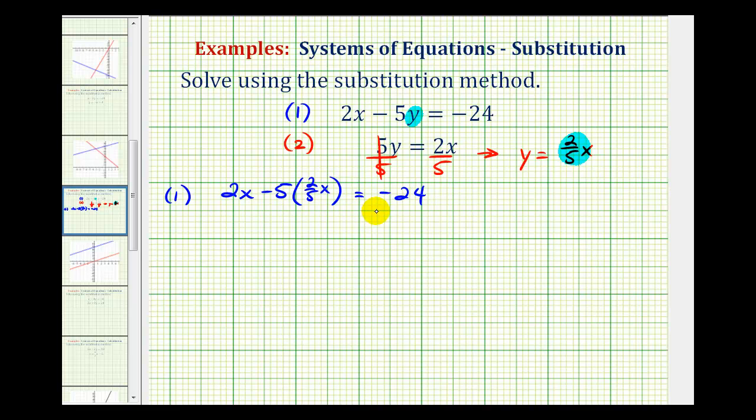And now we can solve for x. It might be helpful to put this five over one, and notice how the five simplifies out, five over five is equal to one. So when we simplify this, we have 2x minus, well this is also 2x, equals negative twenty-four. Here we have two like terms, but 2x minus 2x is zero, so we have zero equals negative twenty-four.